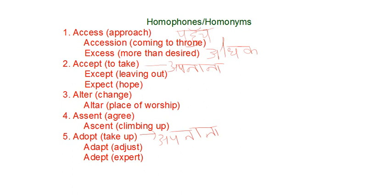Assent means to agree. Ascent means climbing up. Adapt means to take up.